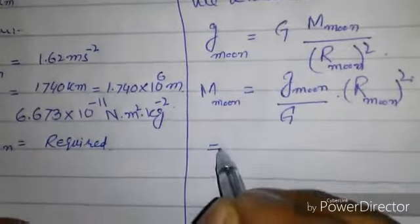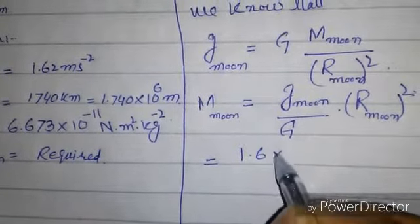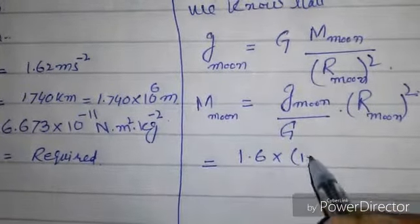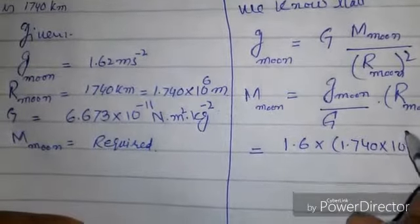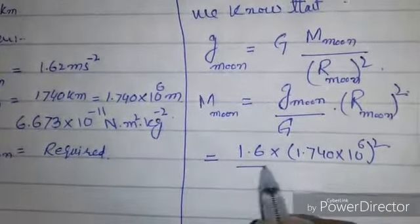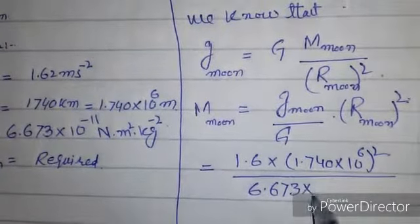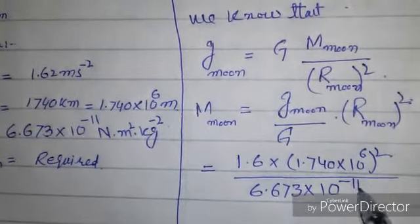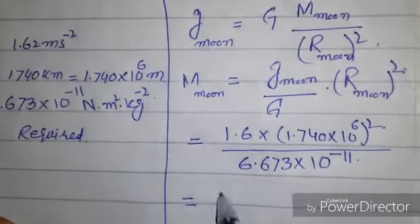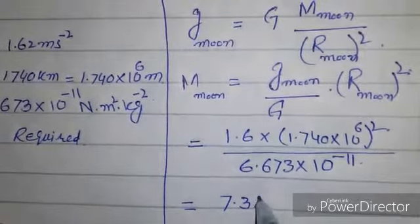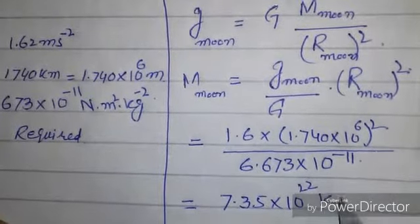Now, putting the values: 1.6 into 1.740 into 10 raised to 6 squared over 6.673 into 10 raised to minus 11. We got on simplification 7.35 into 10 raised to 22 kilogram.